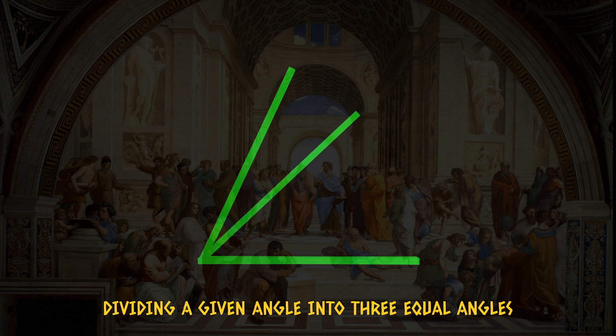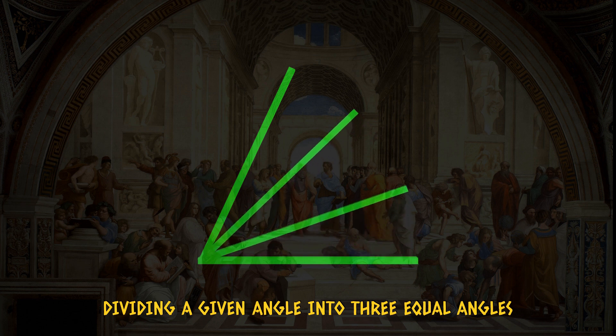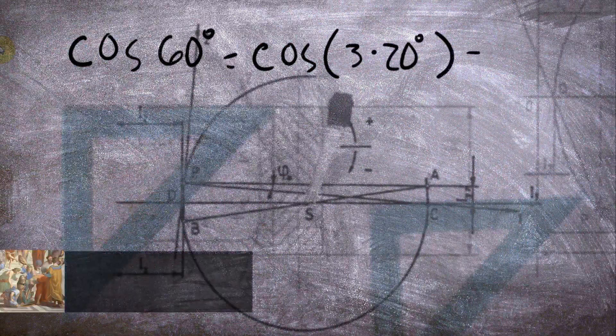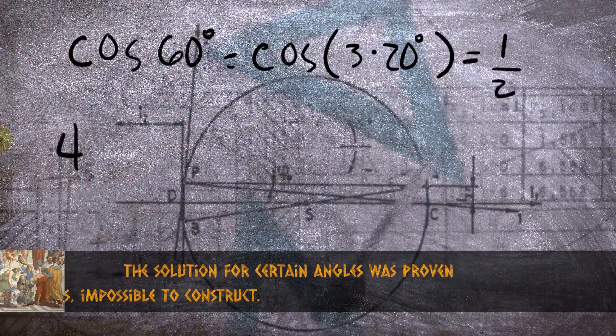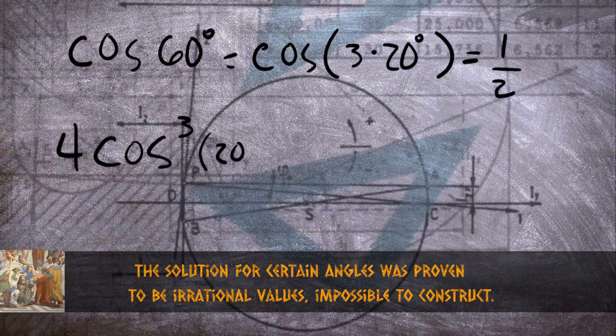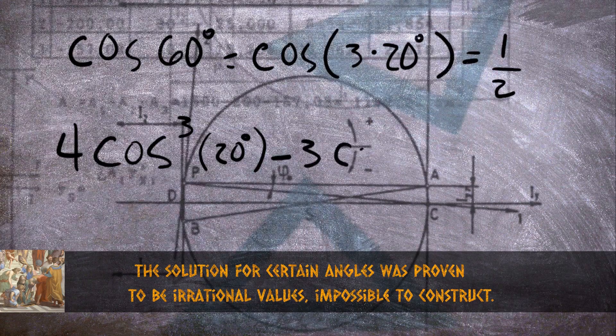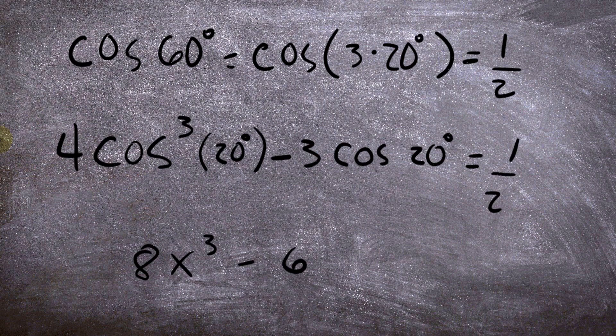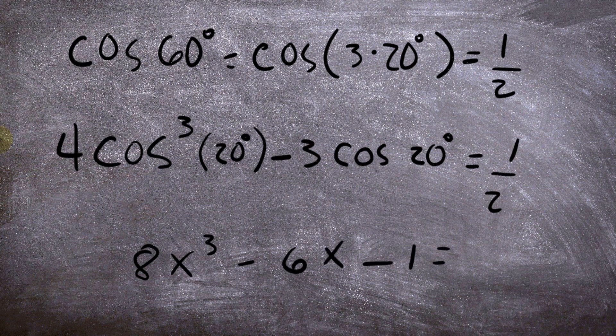The second problem was trisecting an angle. Although some angles may give a false sensation that it is possible, there's not an effective method. Many years later with trigonometric equations it was proved that in order to solve some cases, the solution must be an irrational value.